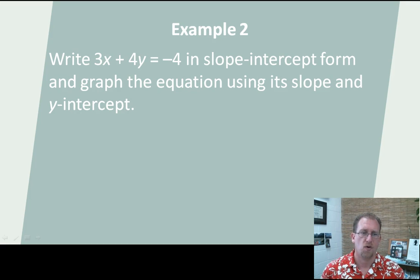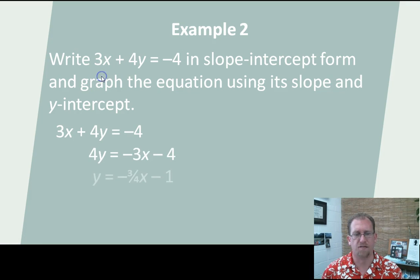Let's do an example. Write 3x + 4y = -4 in slope-intercept form and then graph it. So 3x + 4y = -4. I need to solve this for y, right? So let's bring the 3x over, and then let's divide by 4. And I have y = -3/4x - 1.